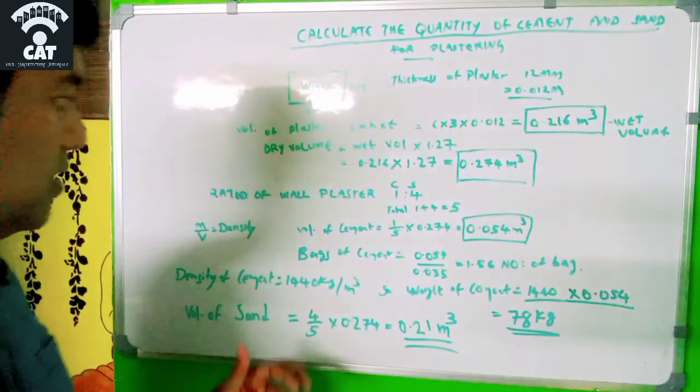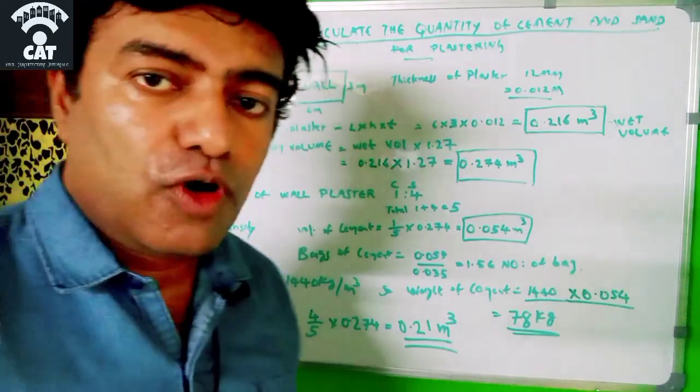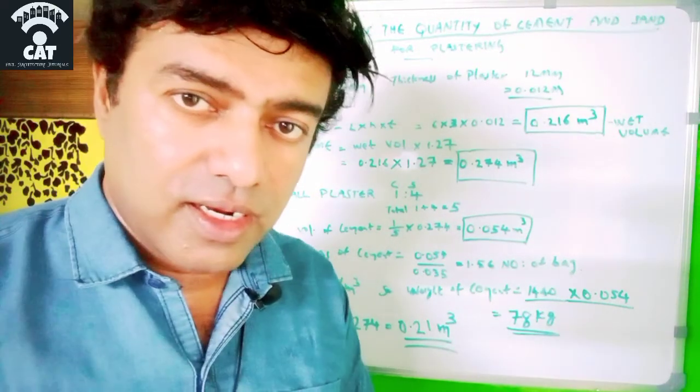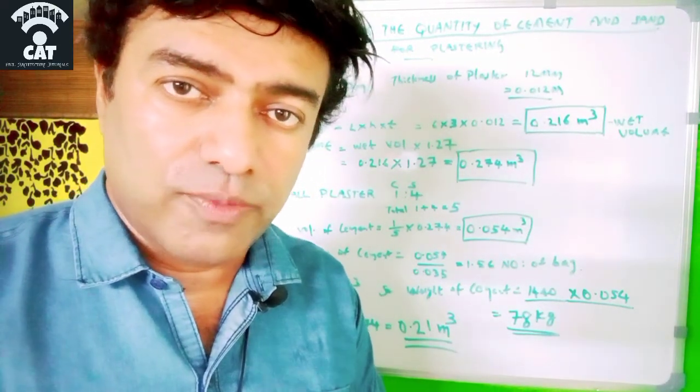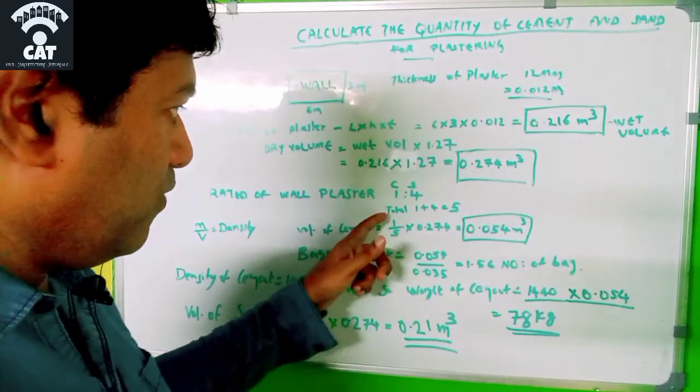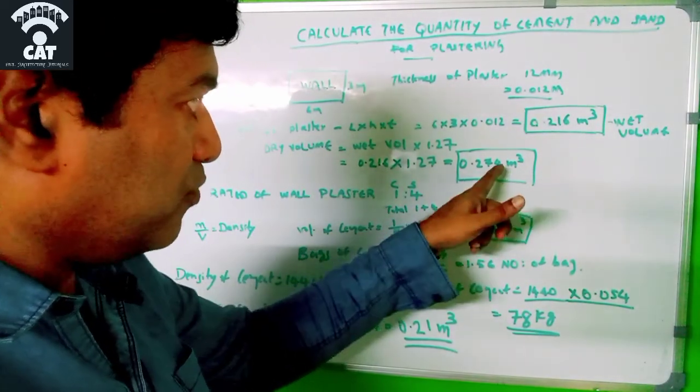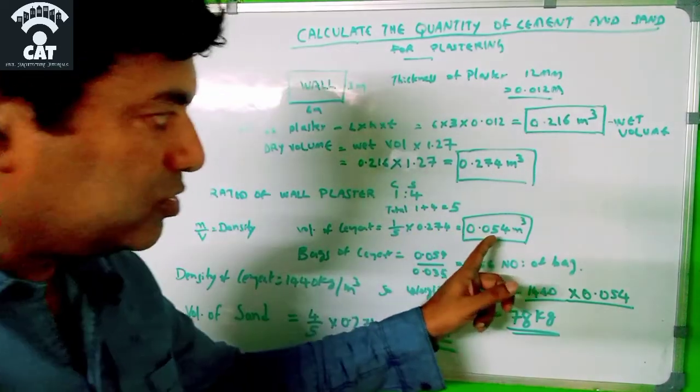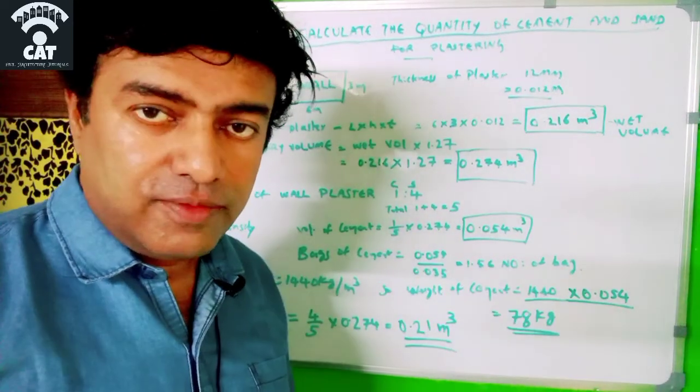In the ratio 1:4, 1 represents the volume of cement. So 1/5 × dry volume = 1/5 × 0.274 = 0.054 cubic meters, which is the volume of cement.